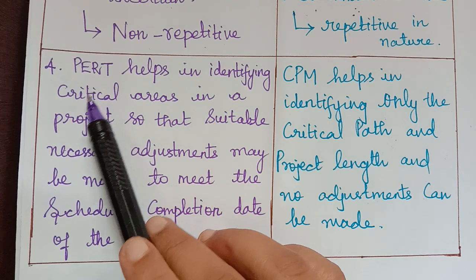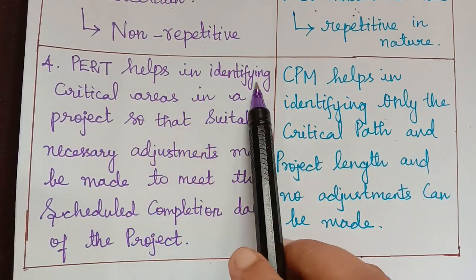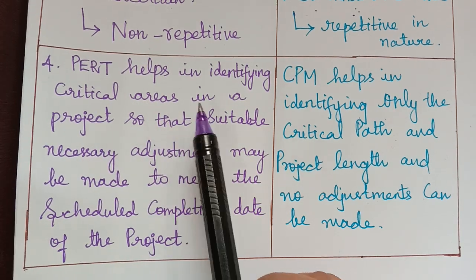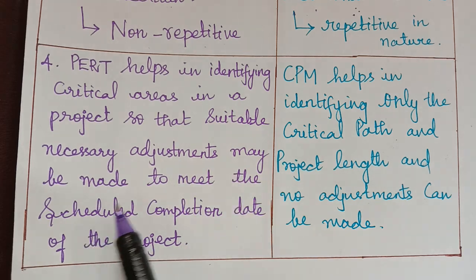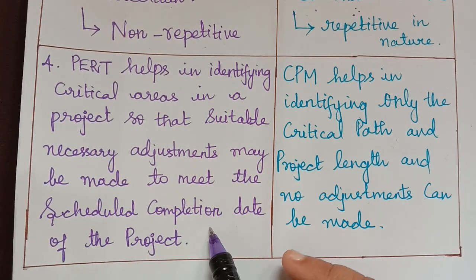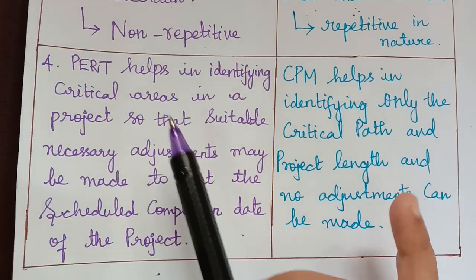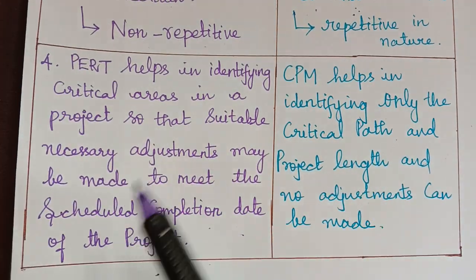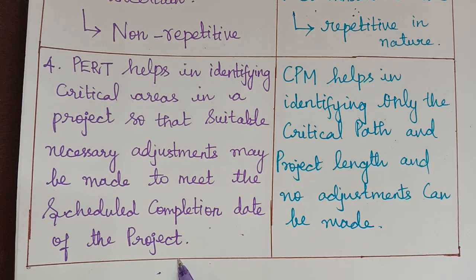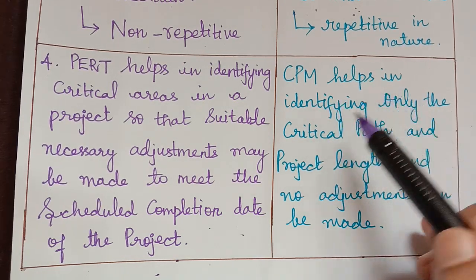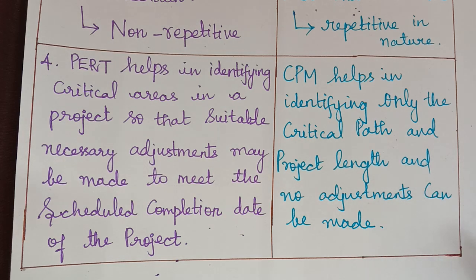The fourth difference is: PERT helps in identifying the critical areas in a project so that suitable adjustments may be made to meet the scheduled completion date. Because PERT is probabilistic in nature, adjustments can be made to attain the scheduled completion. In CPM, it helps in identifying only the critical path and the project length, and no adjustments can be made.